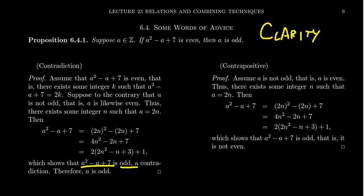Now this contradicts the fact that we assumed that a squared minus a plus seven is an even number. Since we got a contradiction, the opposite of what we assumed for the sake of contradiction must be true. So it actually must be that a is odd.